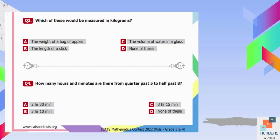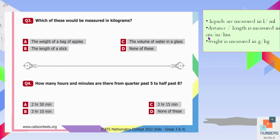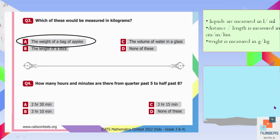Question number three: Which of these would be measured in kilograms? Liquids are always measured in liters or milliliters, so option C, the volume of water, is measured in liters. Distance or length is measured in centimeters, meters, or kilometers, so the length of a stick is measured in centimeters or meters. Weight is always measured in grams or kilograms, so option A, the weight of a bag of apples, is our answer.